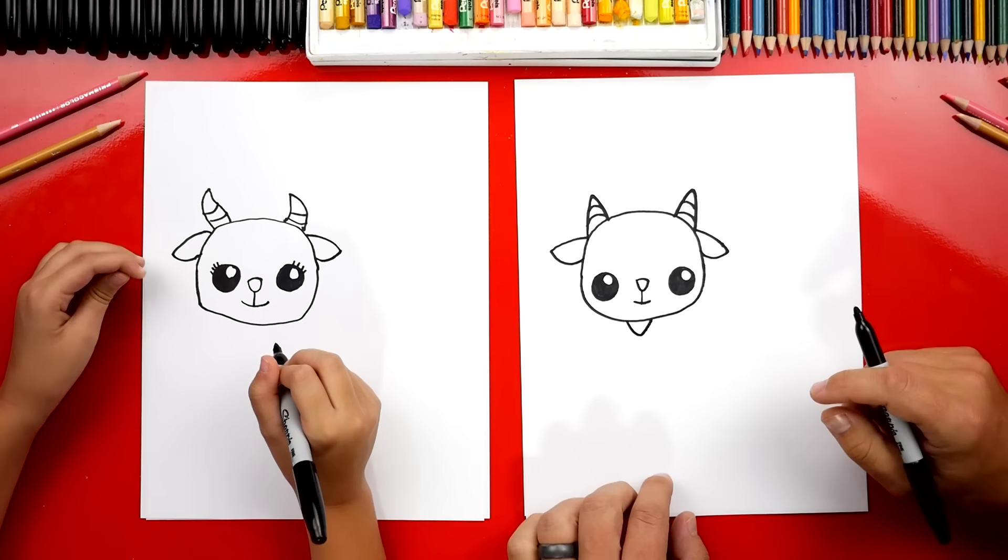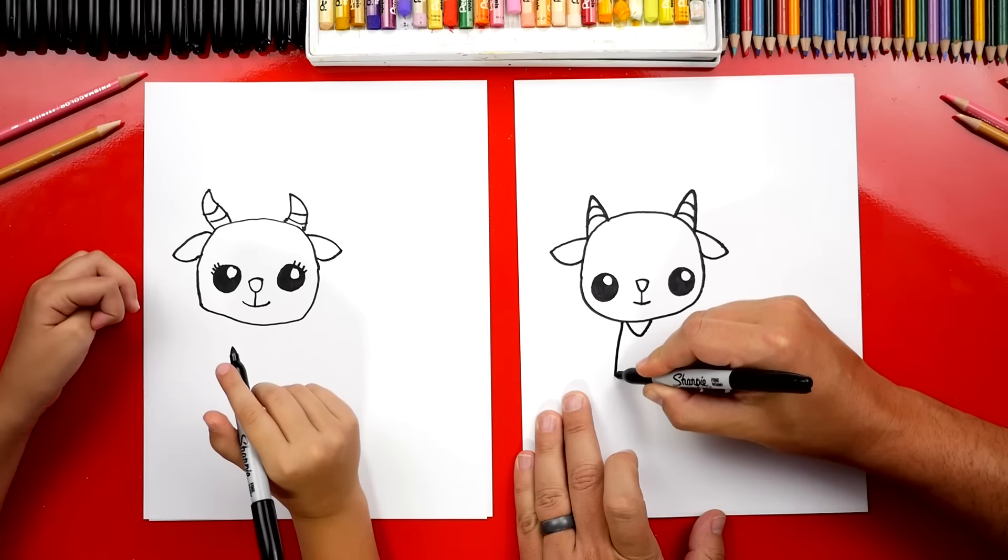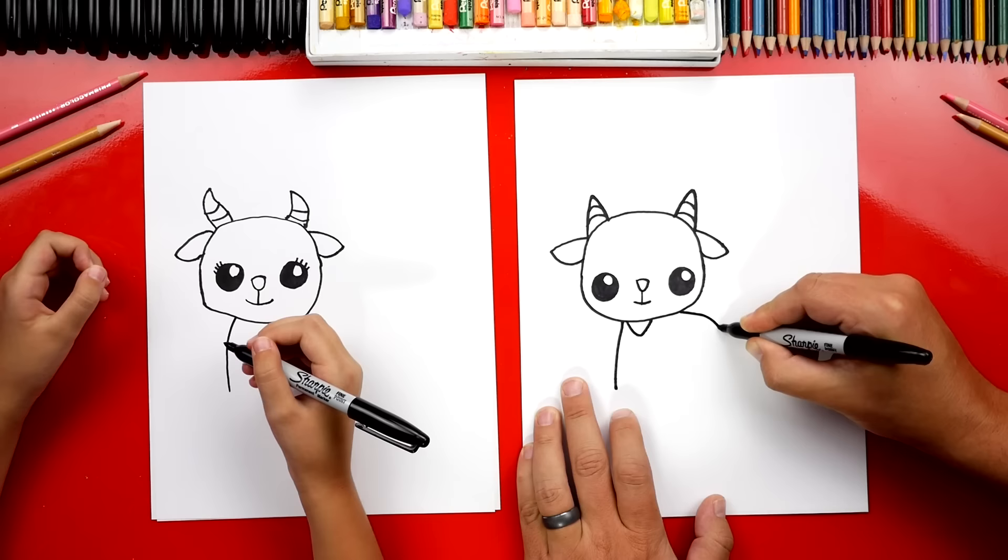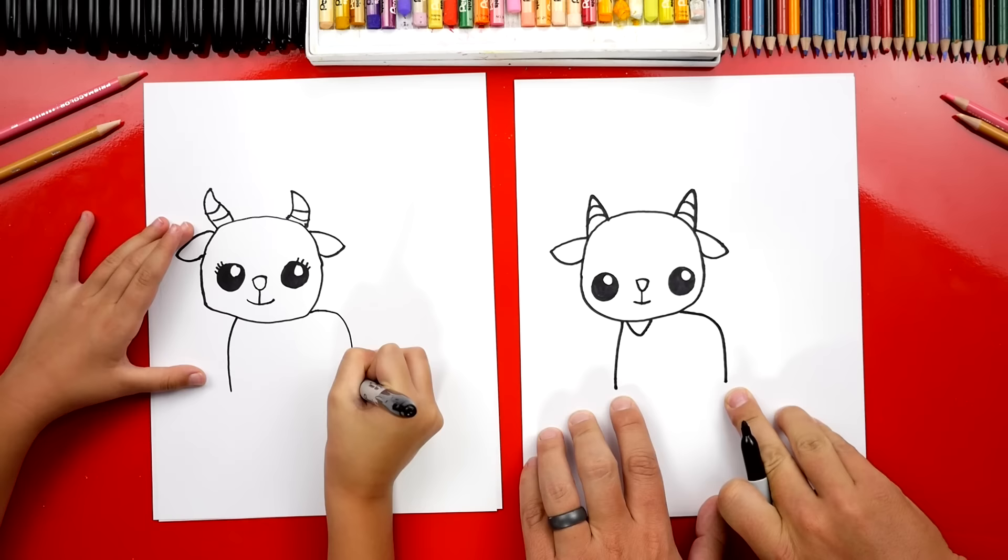Okay, now should we draw the body? Yes. Okay, we're gonna draw a curve that comes down. We're gonna start here. We're gonna draw a curve that comes down about that far. We're gonna draw a short goat. And then we're gonna draw his back and the back of his leg over here. So we're gonna draw a curve that comes down about the same size, same length. Yeah, good job.